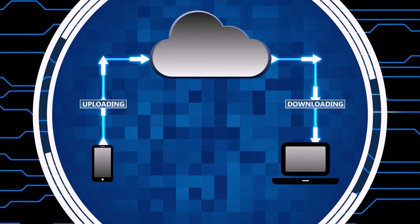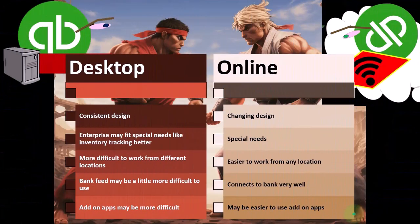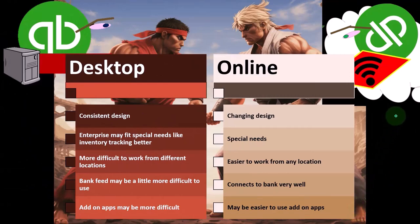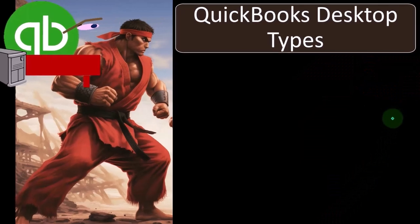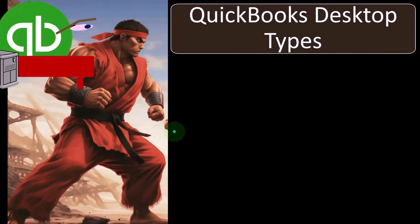So there could be pros and cons with that. But in general, if you're trying to look at other integrations within QuickBooks with other apps, it might be easier on the online version than the desktop. So once we choose the desktop version, then we get into what kind of desktop version do we want?